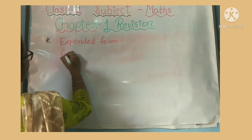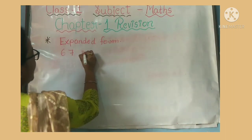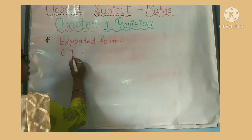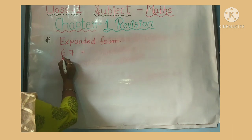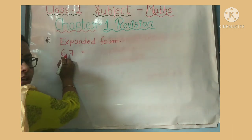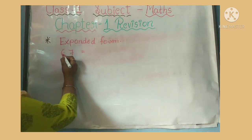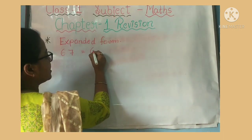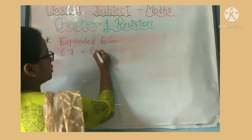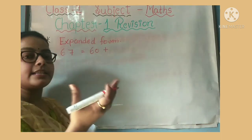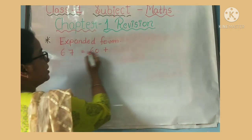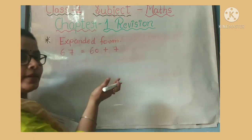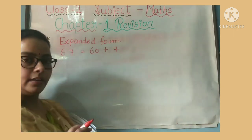Suppose the number given here is 67. What you have to do is write it in expanded form. The first digit is the ones and the second digit is the tens. So how do we write 67? There is a 6 — so we write 60 (six with one zero). Clear — 60 is coming: sixty. Then plus seven. In seven there are no more digits after it, so just write seven. Clear.